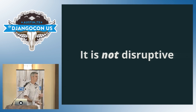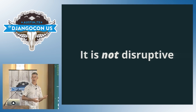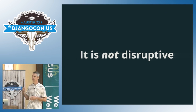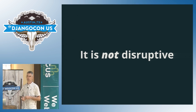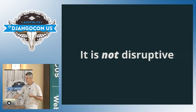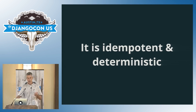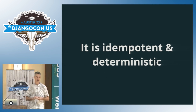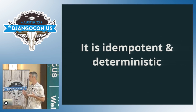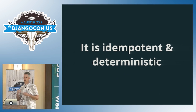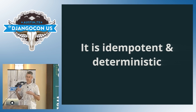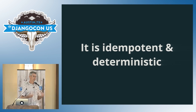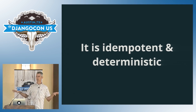Next up, it's not disruptive. You shouldn't have to deploy after hours. Your deployments shouldn't take down the site — even for a few seconds, people shouldn't get 500 errors when deployments happen. And finally, a couple of dollar words here: it's idempotent and deterministic. In deployment these words blend into each other, but basically it's idempotent — you can run it over and over again and you get the same thing. And it's deterministic — given the same inputs, you get the same output. When you deploy on one server, you should get the exact same thing on another server.